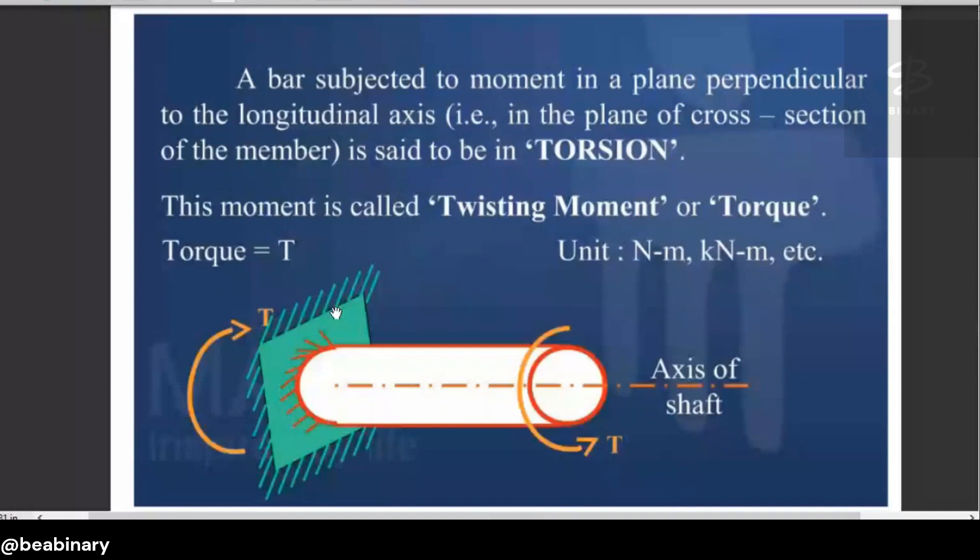Basically, it is the force which is acting on a solid circular shaft in such a way that it is producing a twisting moment on this shaft, which is fixed on the other end. And it is basically having a torque on the other end.